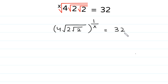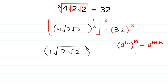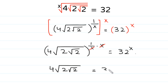Next, we take power x on both sides — at the left side power x and at the right side power x. There is a rule of exponents that a to the power m, to the whole power n, equals a to the power m times n. According to this rule, this power 1 over x is multiplied by this power x, giving 4 times square root of 2 times square root of 2 to the whole power 1 over x times x, equal to 32 to the power x.